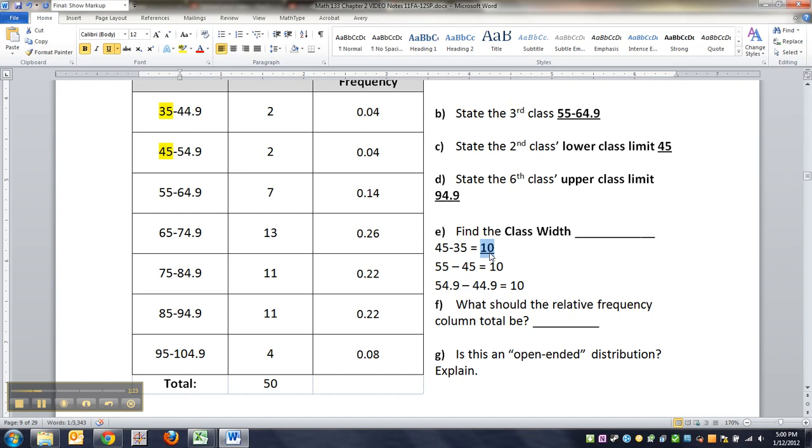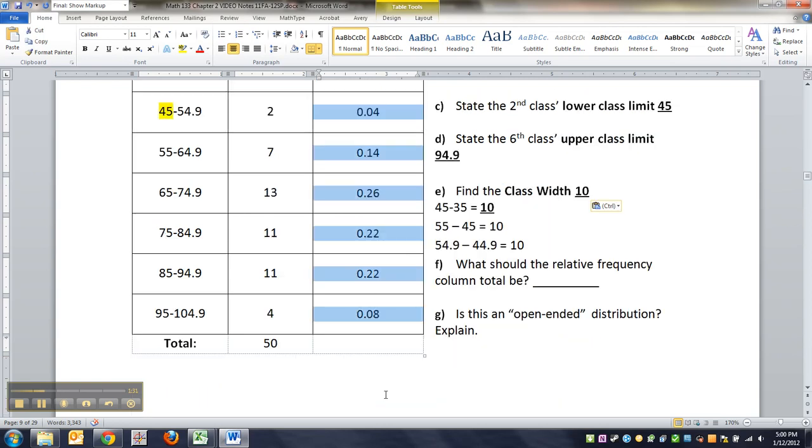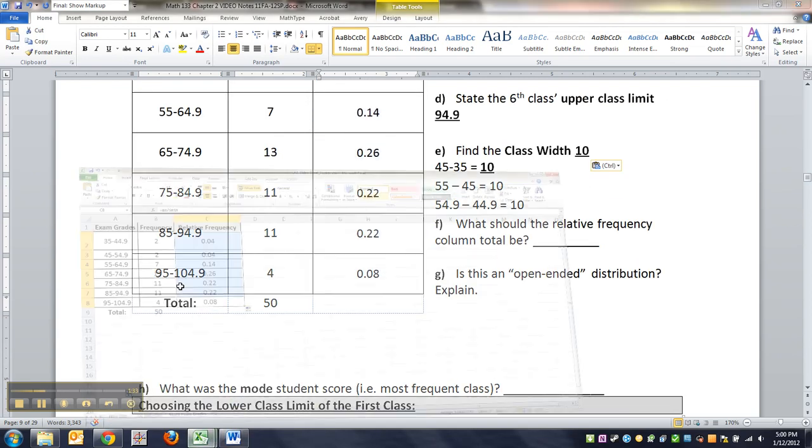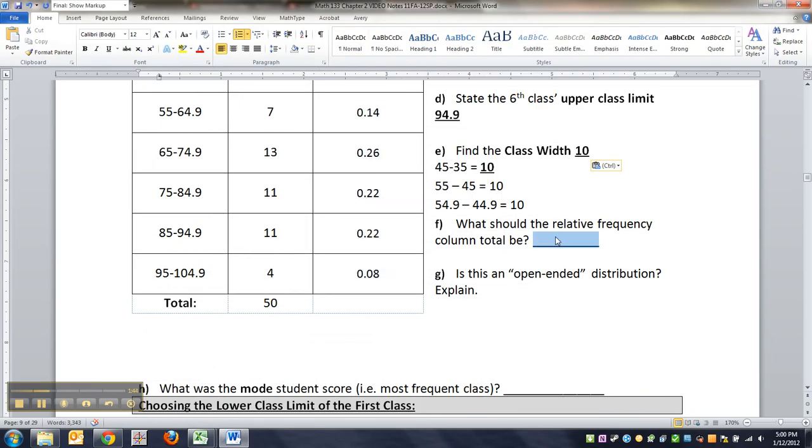All right, what should the total of the relative frequency column be? I mean, of course I could go find it rather quickly with Excel. I could just drag my sum formula over here. But everybody should know that when I lift up my mouse button it's gonna be 1. Yes, you guessed it. So it should be 1.